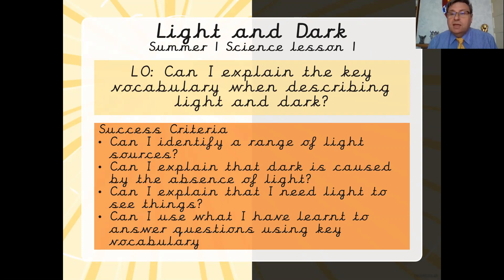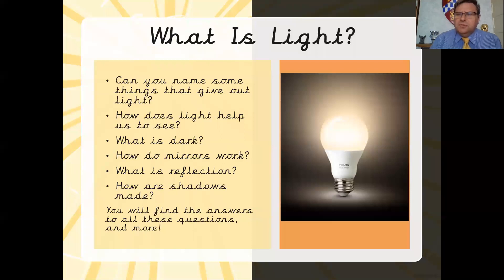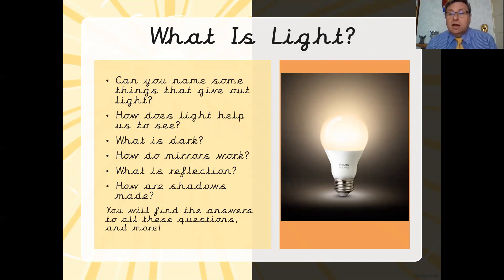The first lesson is really just getting to know what light actually is. So what is light? It'd be really useful if you could pause the video and see if you can work out for yourself what things give out light. Can you name things that actually give out light? How does light help you to see? What is dark? How do mirrors work? What is a reflection? What are shadows? Think about it first, pause the video, maybe write down your answers, because you'll be finding out the answers during the next few lessons. It'd be really interesting to write down your answers first and then go back at the end to see what you've actually learnt or whether what you said was right from the beginning.